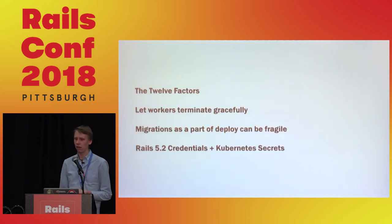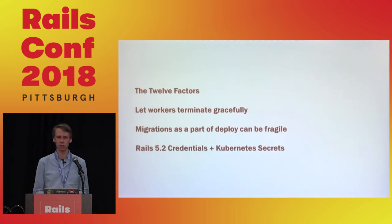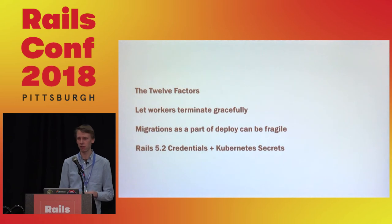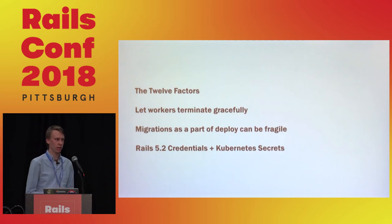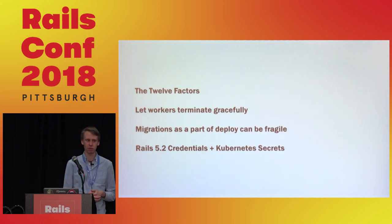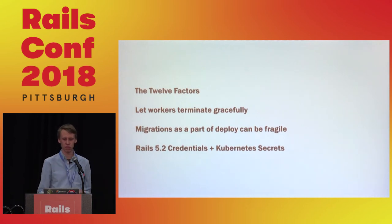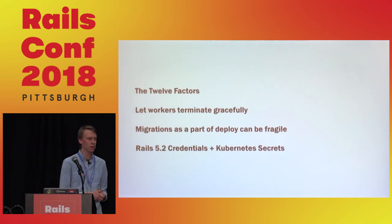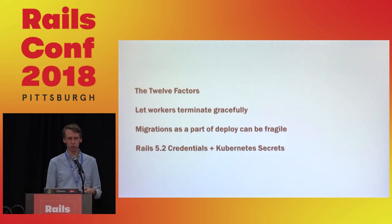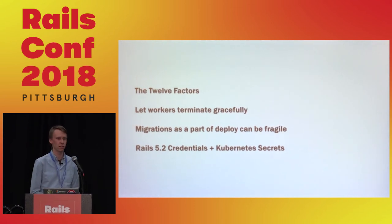To recap: following the 12 factors helps make it easier to run Rails apps in orchestrated environments. Being mindful about worker termination also helps. Migrations as a hook after deploy can be fragile and make the rollout process not very safe, so asynchronous migrations can help solve that. And the credentials feature that ships with Rails 5.2 makes the process of sharing keys a bit easier.